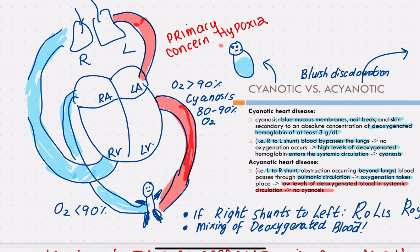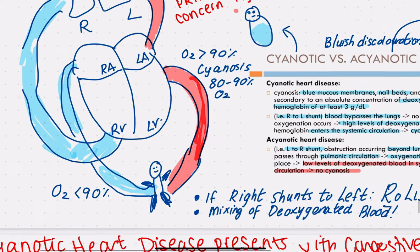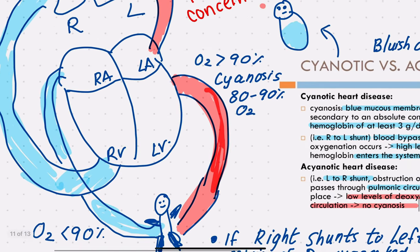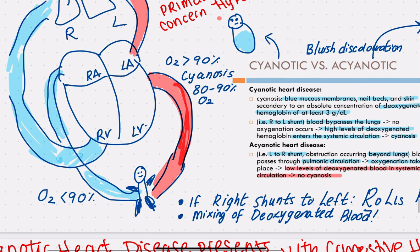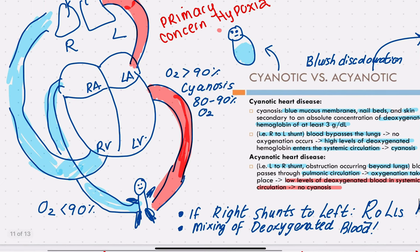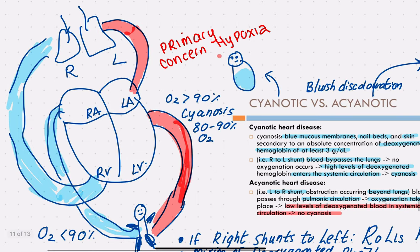The blood returning from the body into the right atrium from the superior and inferior vena cava is blue because it's deoxygenated blood — it has a lower volume quantity of oxygen. This blue blood enters the right atrium, then the right ventricle, where it goes into the pulmonary arteries and enters the lungs.